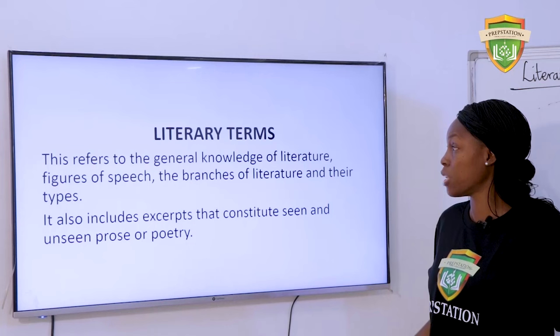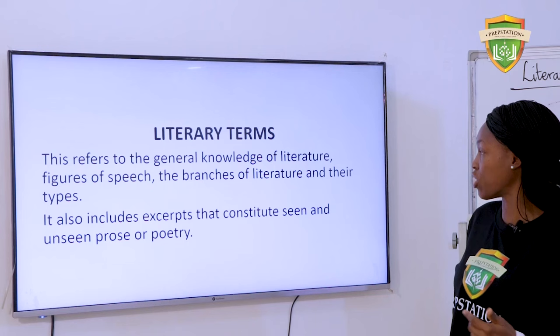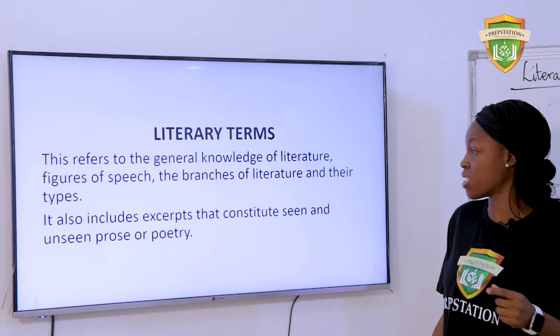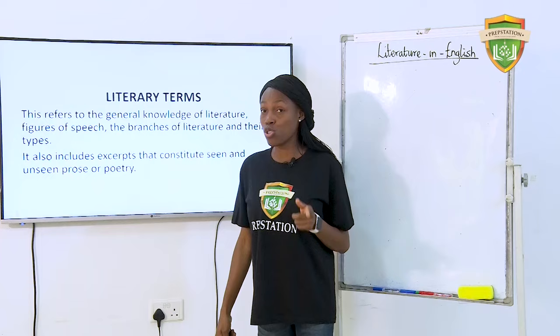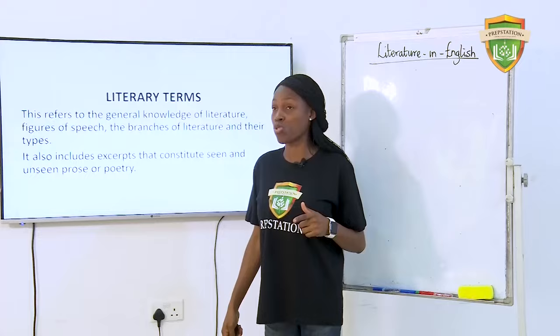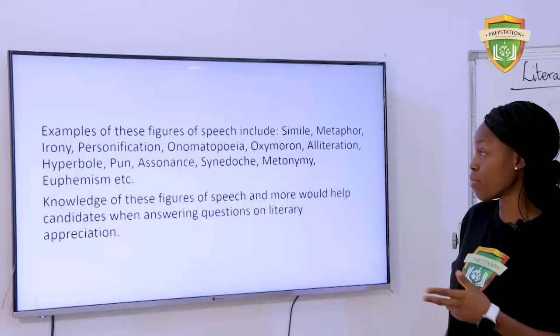Then, seen and unseen poetry. Literary terms refers to the general knowledge of literature, figures of speech, the branches of literature and their types. It also includes excerpts that constitute seen and unseen poetry. Note that for seen and unseen, you could also have seen and unseen prose, not just poetry.